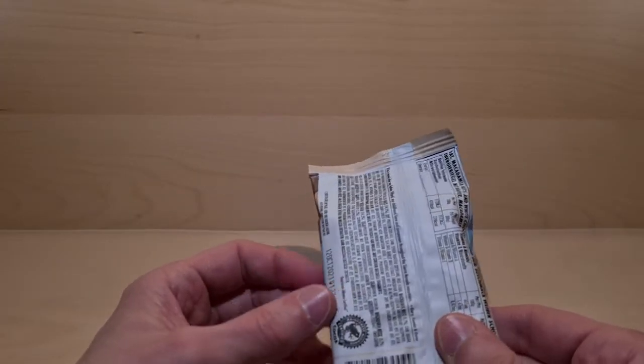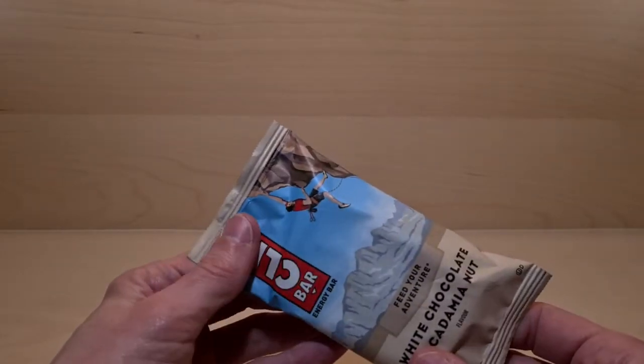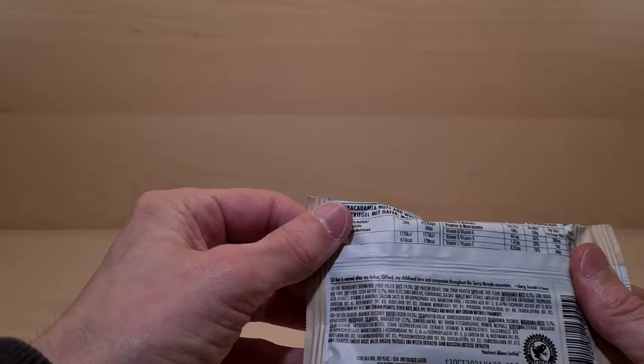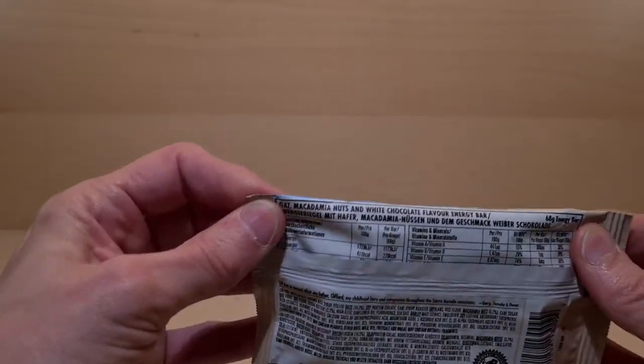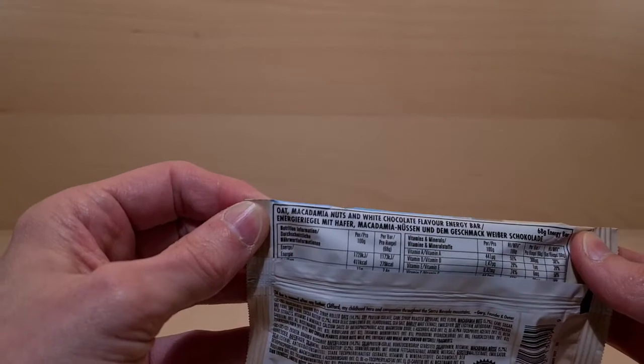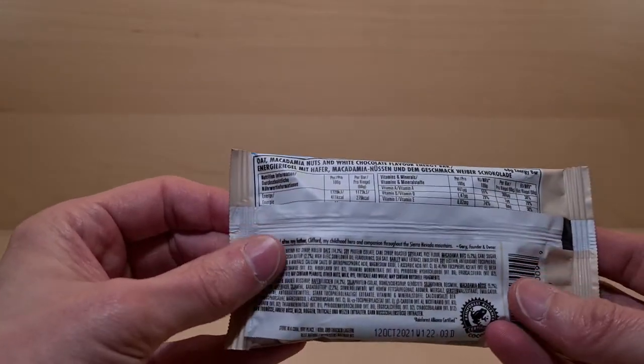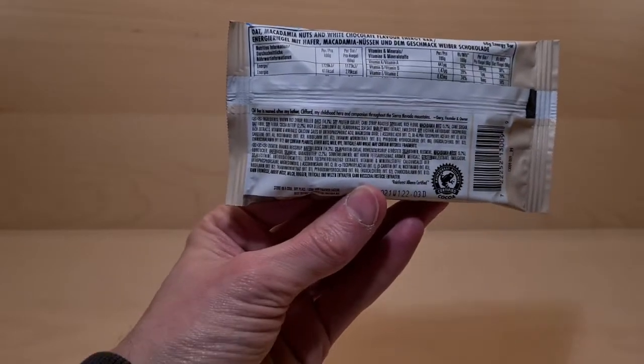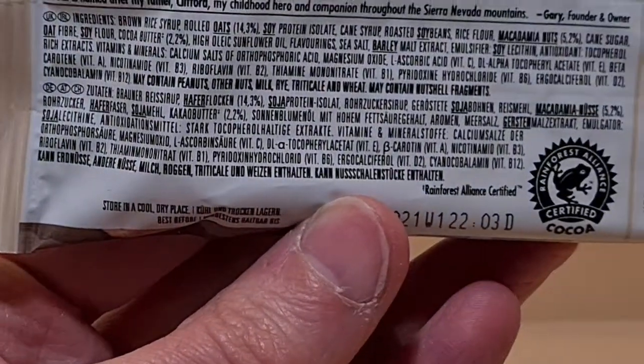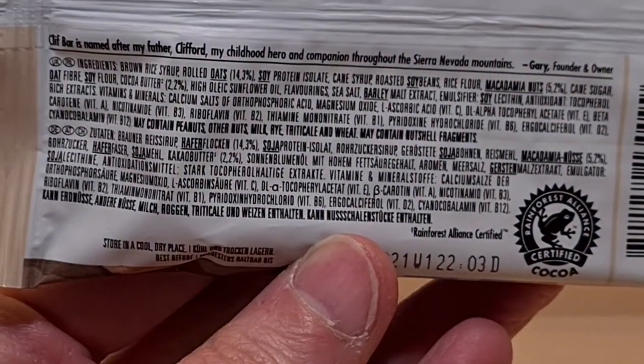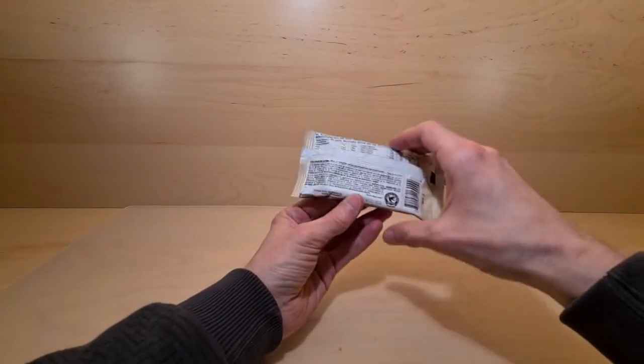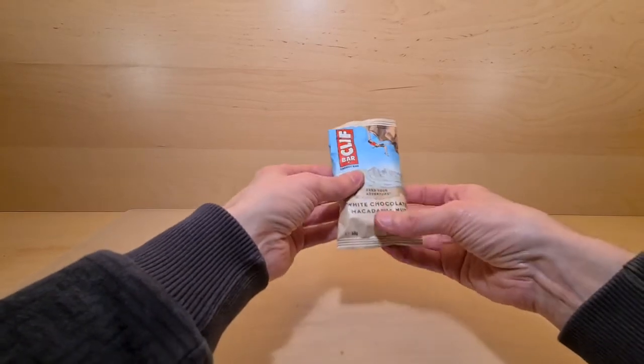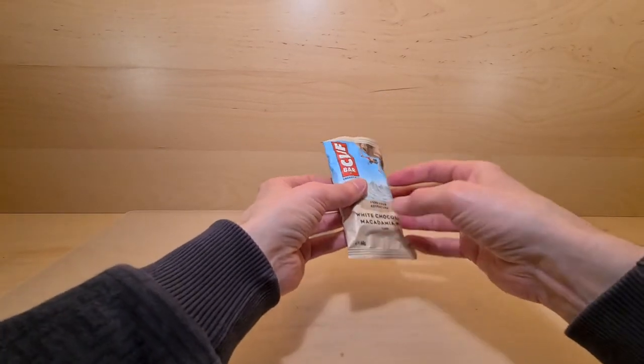This was purchased from Sainsbury's. It is a little bit more expensive and I've never had one of these in my life. This is oat macadamia nut and white chocolate energy bar. That's what's found within. I'm kind of intrigued, I'm kind of wondering what macadamia nuts taste like because I have no idea and no point of reference.